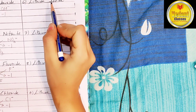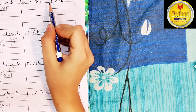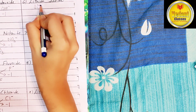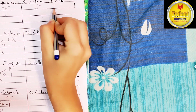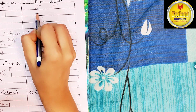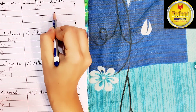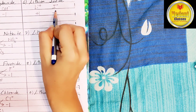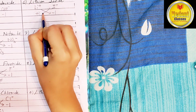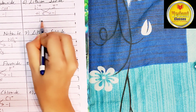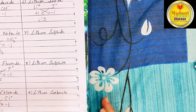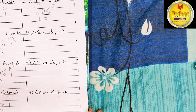Lithium iodide: lithium ion is written as Li+, iodide ion is written as I-. Valency of lithium ion is plus 1, iodide ion is minus 1. Now cross the valency. Compound will be LiI — lithium iodide.